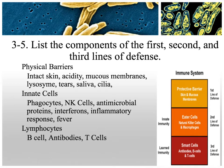The first line of defense consists of physical barriers — you want to keep things from getting into your body in the first place. This includes your skin, the acidity of your skin, mucous membranes, lysozymes (enzymes in tears and saliva), and the cilia and hair lining your nose and respiratory tract. If things get past those barriers, the second line kicks in, which treats all infections the same.